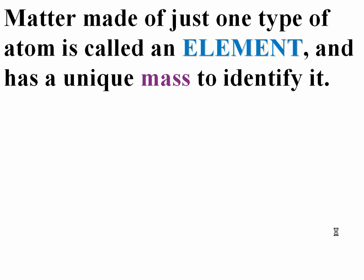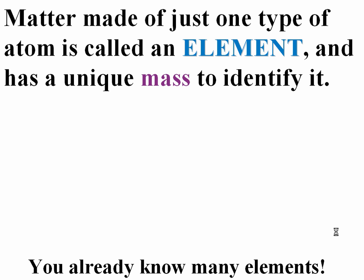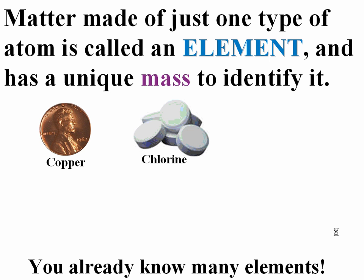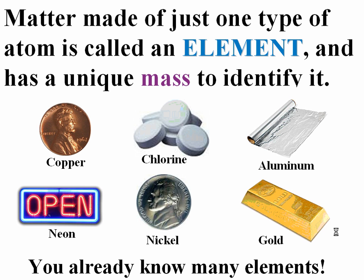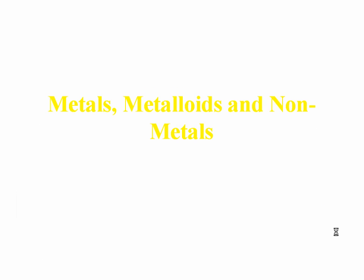Looking at its atoms can tell us a lot about the properties of a substance. Matter made of just one type of atom is called an element, and each element does have a unique mass. That's one of its physical properties. We've already discussed several elements, things like copper or chlorine, aluminum, neon. The periodic table of elements is that master list that contains all the different elements known to man.